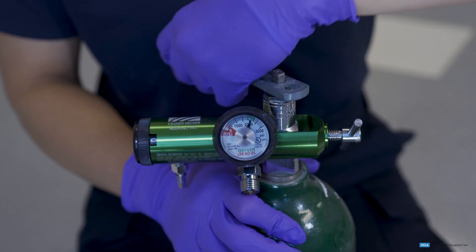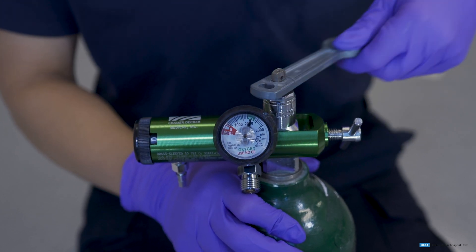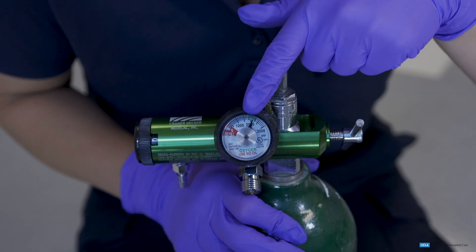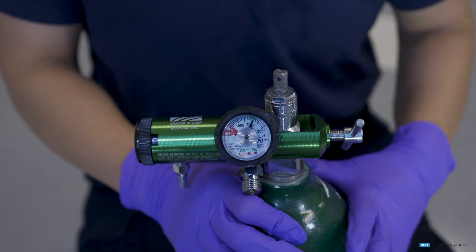Turn the wrench counterclockwise one full rotation to open the oxygen valve. The EMT will then state the pressure by reading the pressure gauge on the regulator.